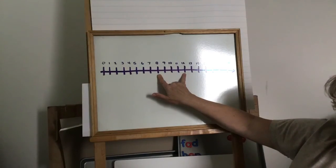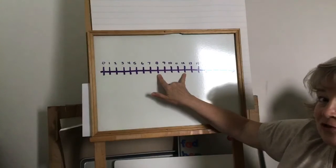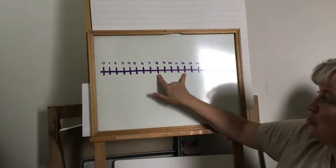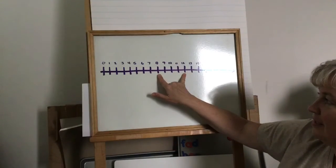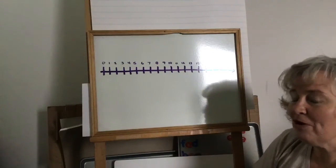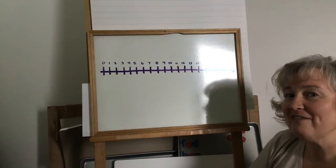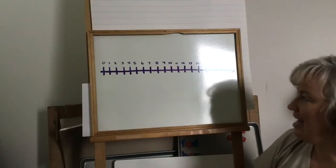It says, I am the number of toes on two feet. So think about how many toes you have on one foot and how many toes you have on the other foot. Add them together.